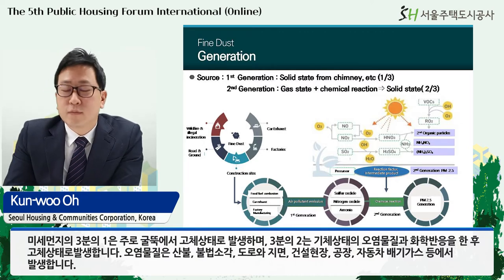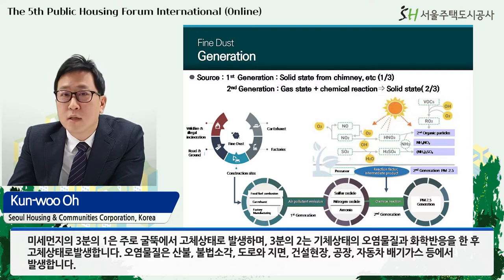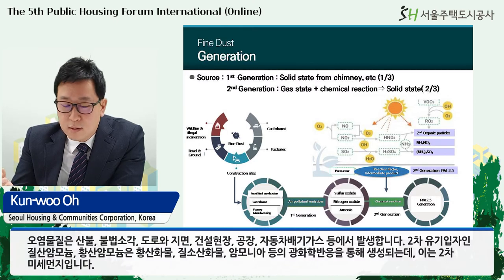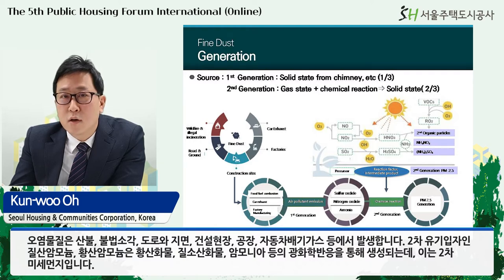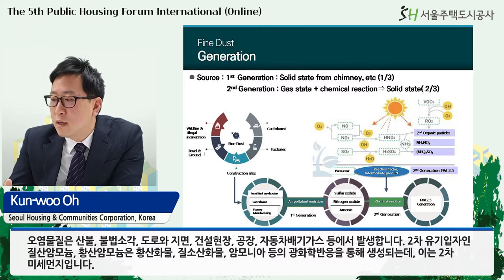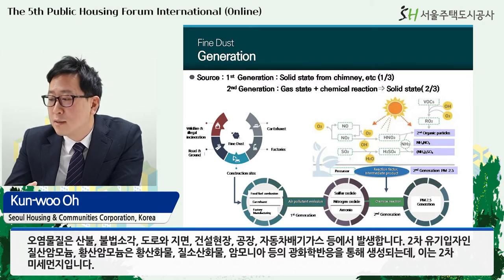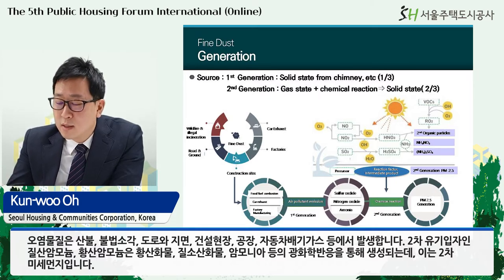One-third of fine dust is generated primarily in solid state from chimneys, and two-thirds are generated in solid state after a chemical reaction of gas-state pollutants. Pollutants are generated from wildfire, illegal incineration, roads, ground, construction sites, factories, and car exhaust gas. Secondary fine dust — organic particles, ammonium nitrates, and ammonium sulfates — are produced due to photochemical reaction of sulfur oxide, nitrogen oxide, and ammonia by sunlight.